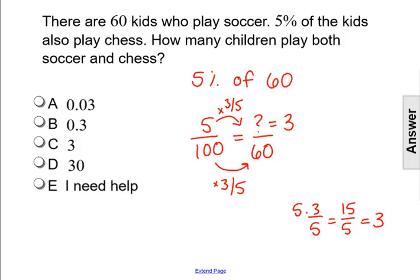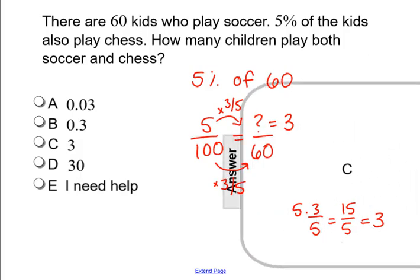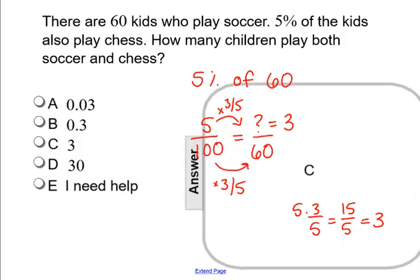It's 5% of 60, which is answer C, three children.